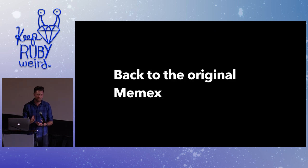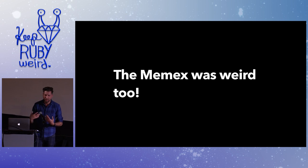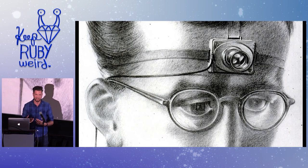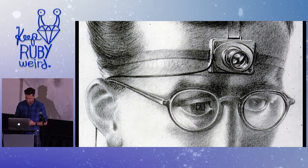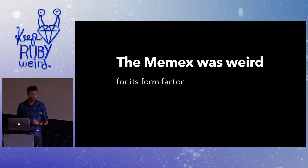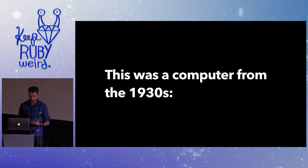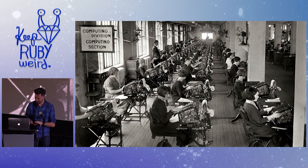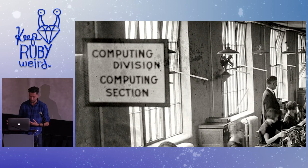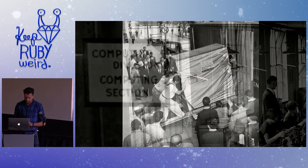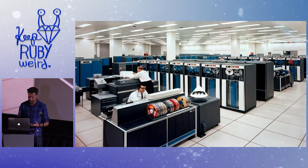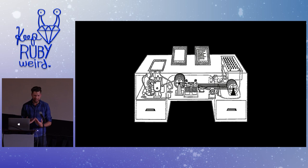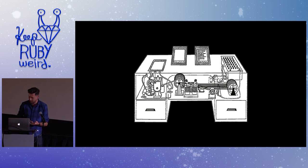To bring it back to the original Memex history: the Memex was weird too. First, its form factor was strange. Computers in the 1930s were either rooms of people — literally called 'computers' — or room-sized machines. Even 1950s hard drives were enormous, and mainframes filled rooms. The Memex, on the other hand, was a desk-sized, one-user personal device — small enough to fit at your desk, designed for just one person. That was strange.